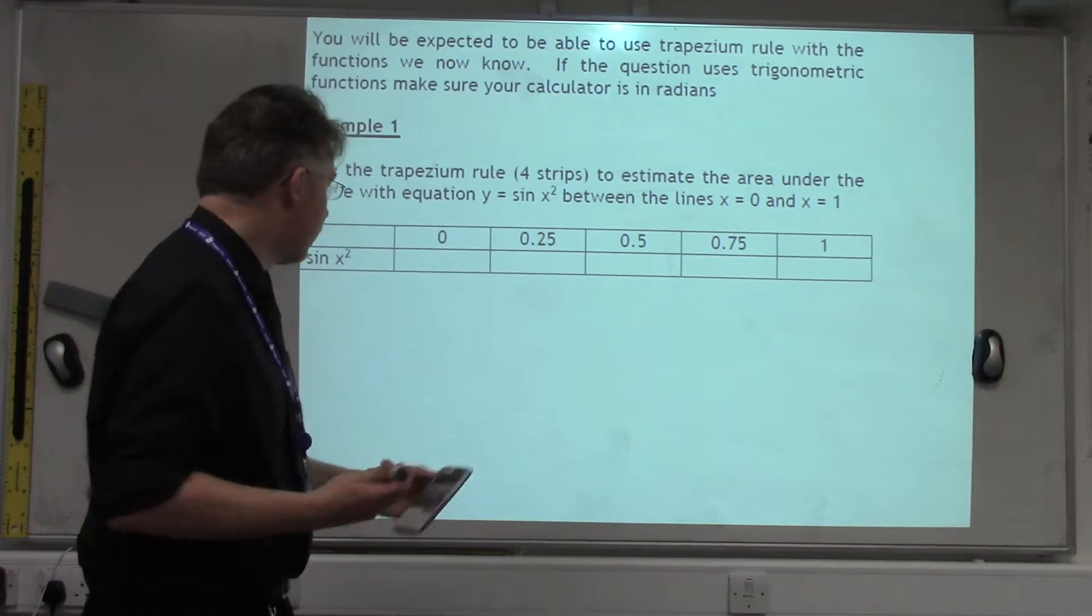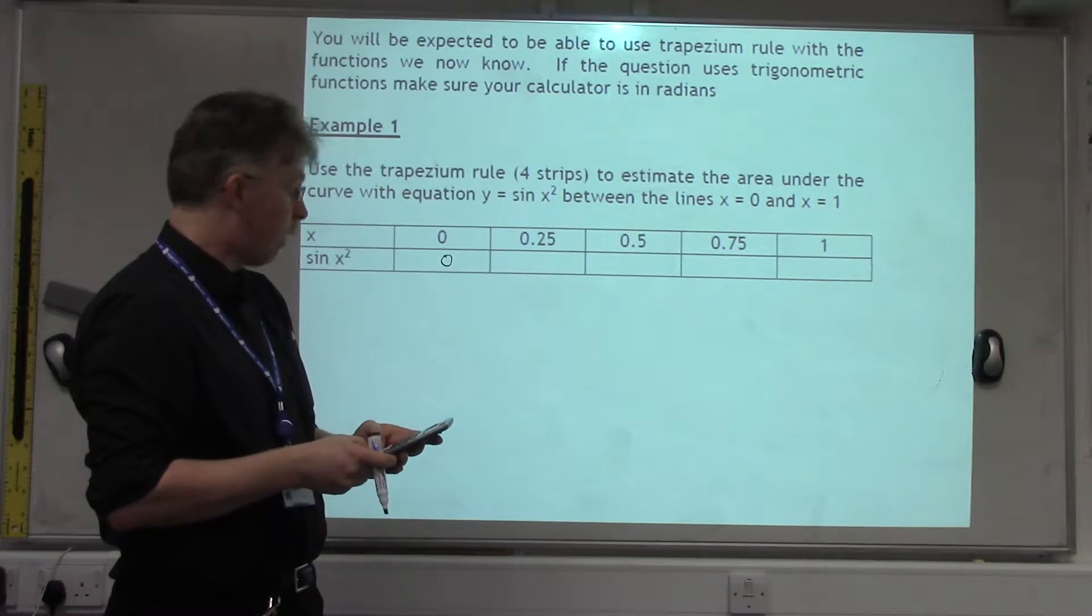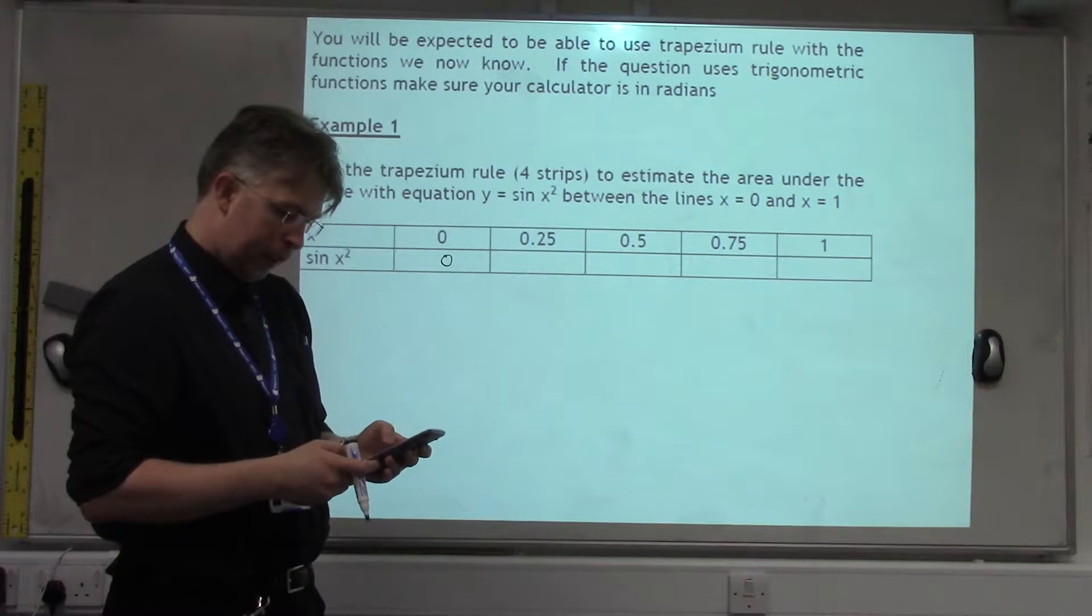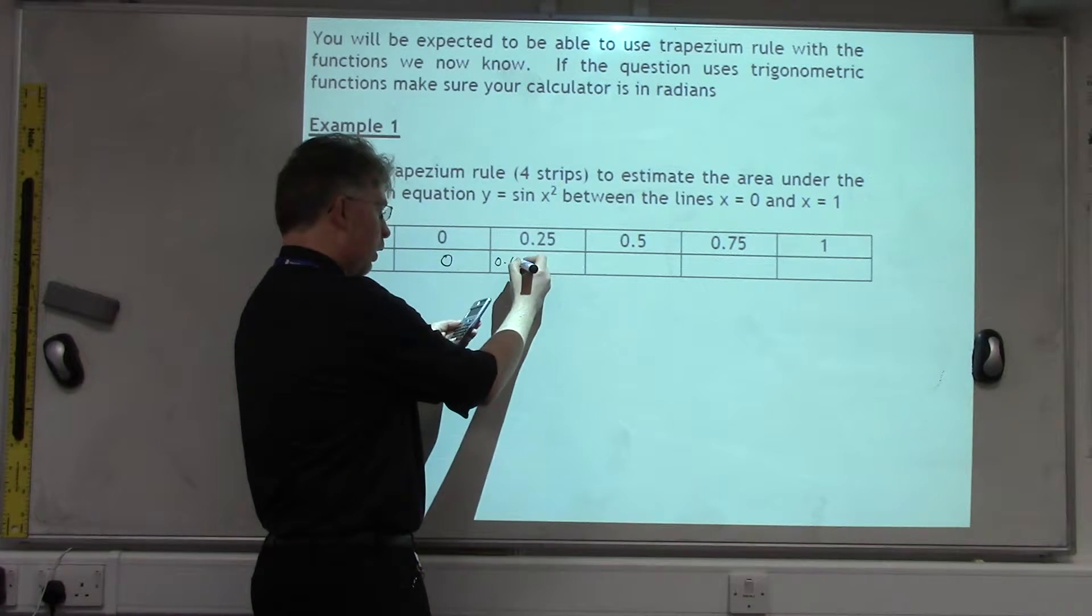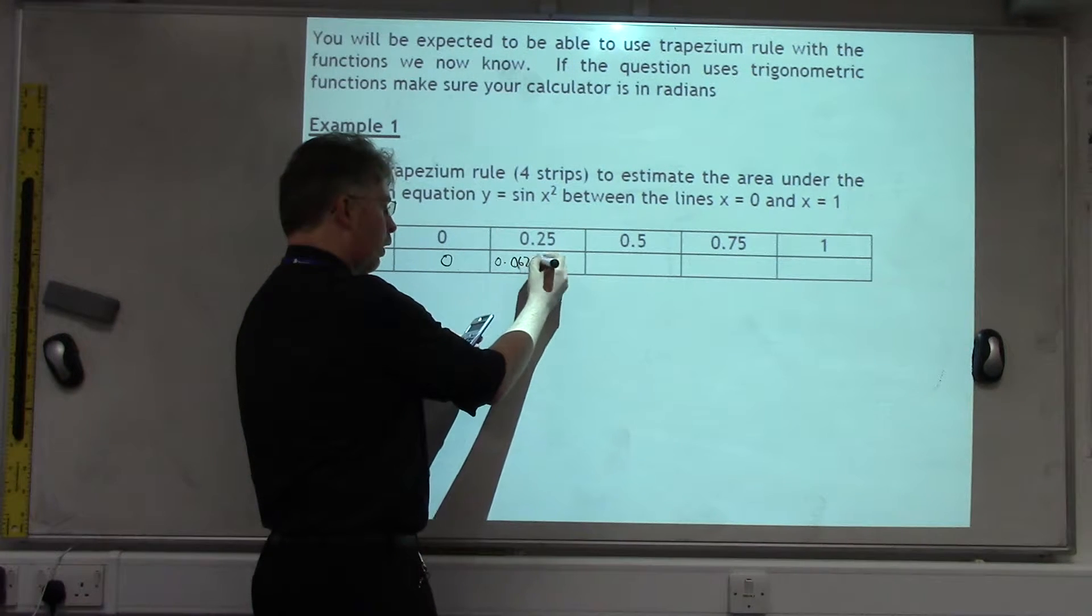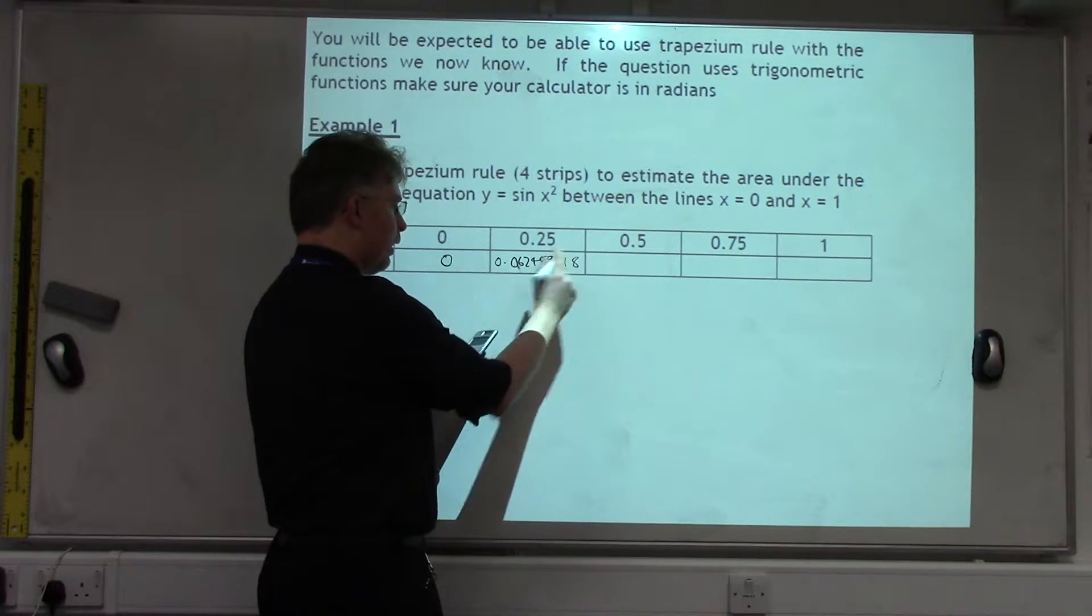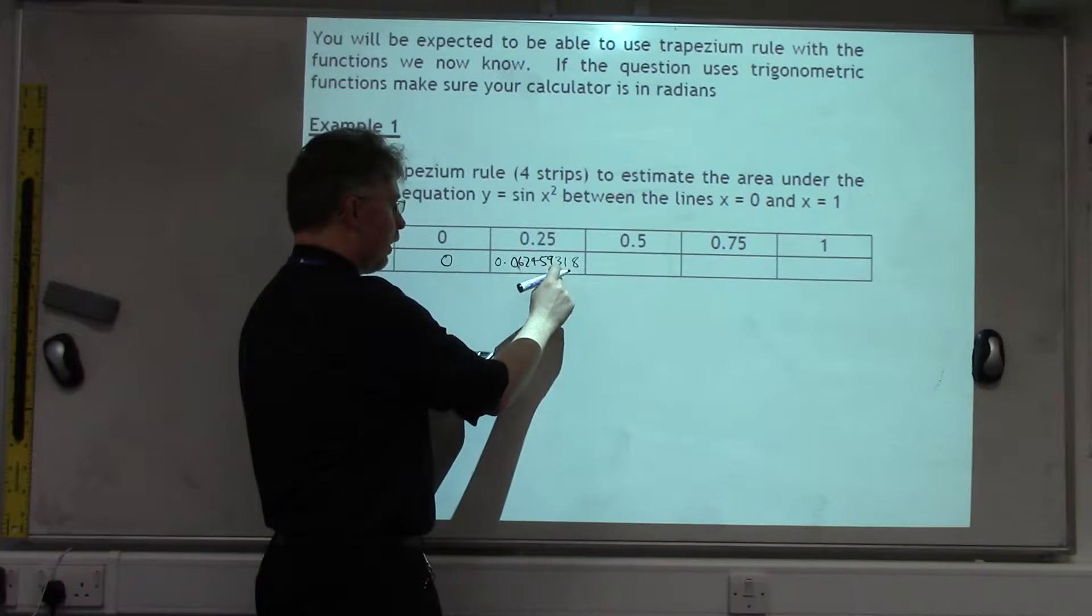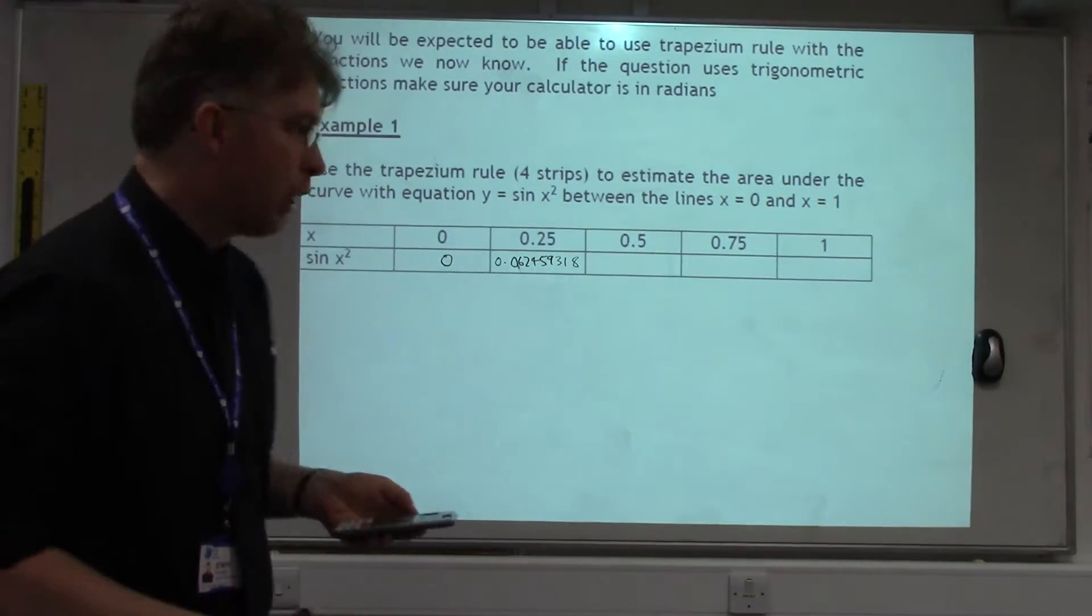So sin 0 squared is 0, sin 0.25 squared is 0.062459318 to nine decimal places. The example generally asks for 5 or 6 decimal places.